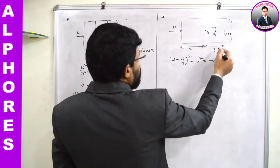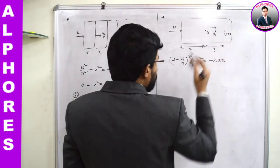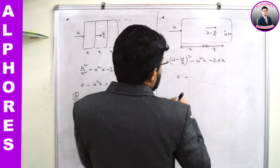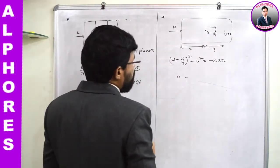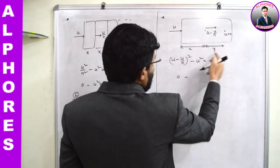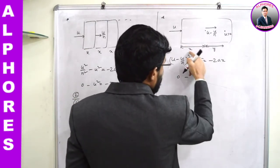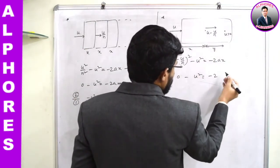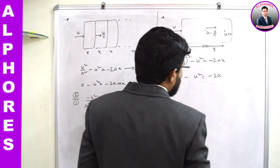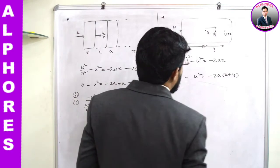After traveling a further distance y, the bullet comes to rest — final velocity is 0. Considering the entire path of distance x + y from initial velocity u: 0 - u² = -2a(x + y). That is how this is written.